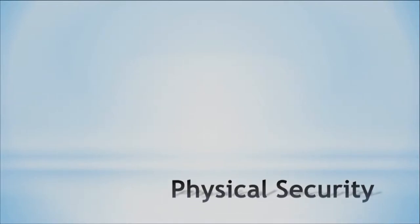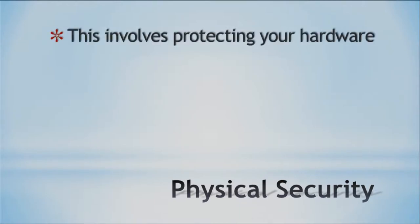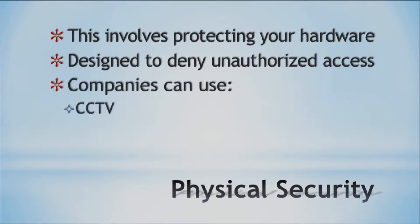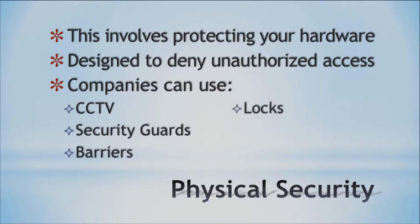One of the things we can do is implement physical security. What this is going to do is protect our hardware. We don't want someone to just walk in and walk off with our laptop or desktop. We want to make sure we have some type of physical security that helps protect this. It involves a lot of different aspects, and the main purpose is we're designing it so we don't allow any unauthorized access. Companies do this in different ways — CCTV, security guards, barriers, locks, and different ways of controlling access.